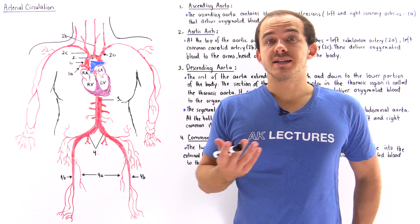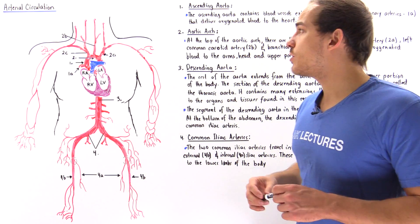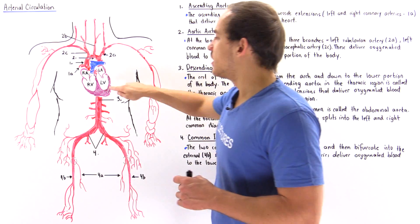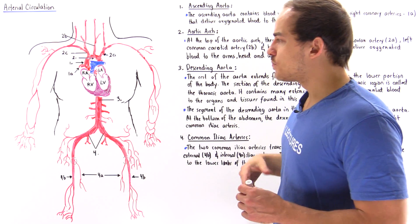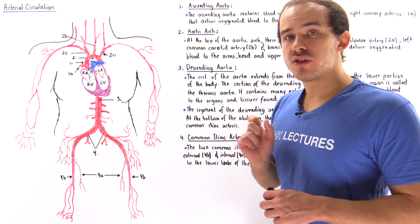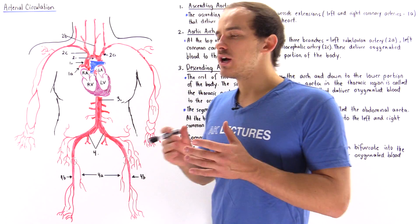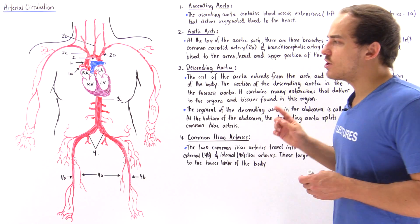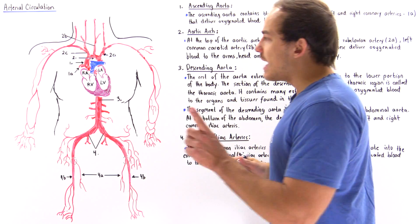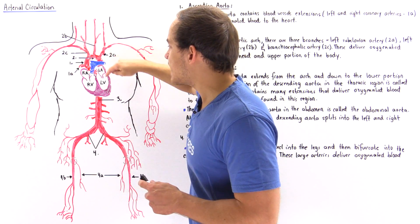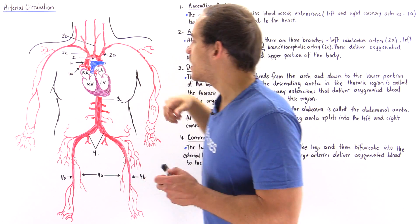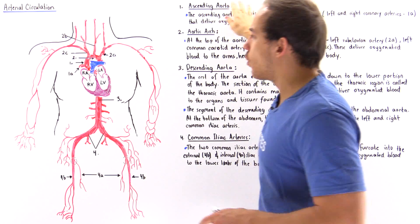Let's quickly take a look at some of the major arteries found within our circulatory system, beginning within the left ventricle of the heart. When the left ventricle contracts, it pumps all that blood into the largest artery of the body known as our aorta. The segment of the aorta that extends from the left ventricle and moves upward is known as our ascending aorta.